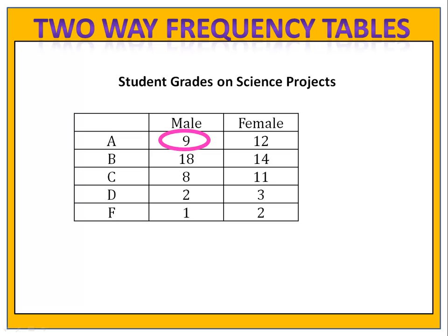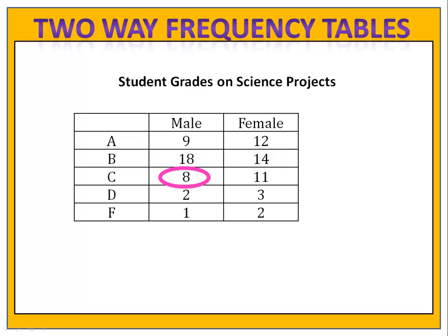We can see in the table that there were nine males who got an A, twelve females who got an A, eighteen males who got a B, and fourteen females got a B. Eight males got a C, eleven females got a C, and so on and so forth.